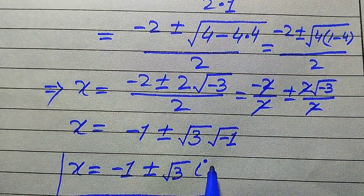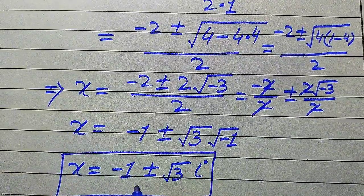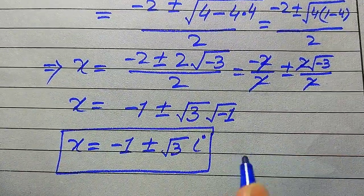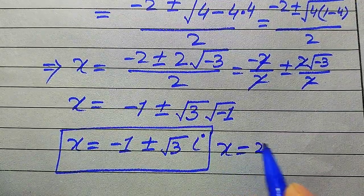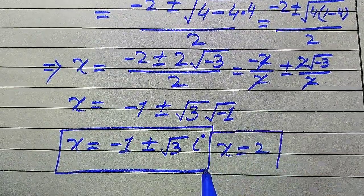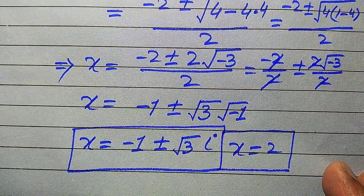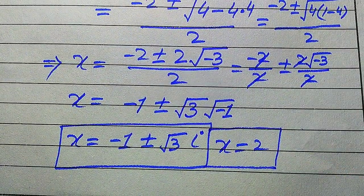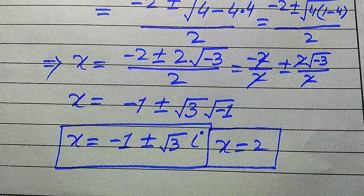So these are the two other complex values of x, and x equals 2 is the one real value. These are the three roots of the given equation. This is the final answer. Thank you so much for watching this video — please subscribe to my channel for more exciting videos.